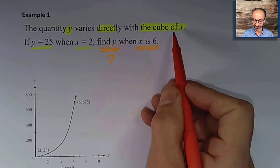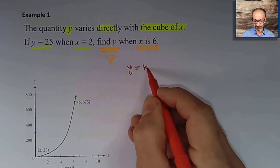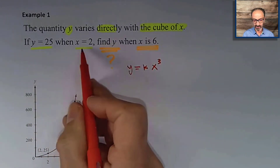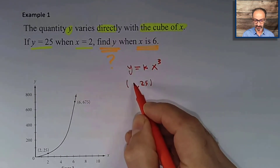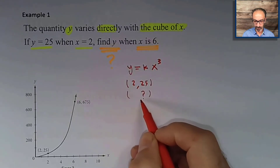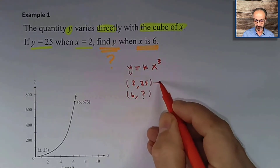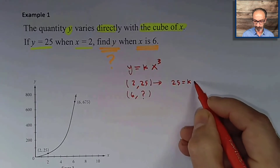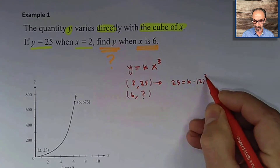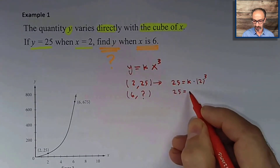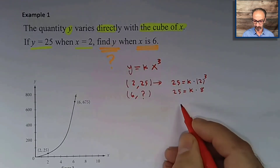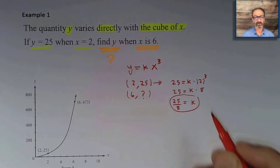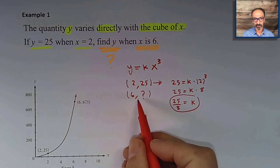Example one: the quantity y varies directly with the cube of x, meaning y varies directly with x to the power 3. If y equals 25 when x equals 2, find y when x equals 6. We use the formula to find k: 25 equals k times 2 to the power 3, so 25 equals k times 8. Dividing both sides by 8, we get k equals 25 over 8.